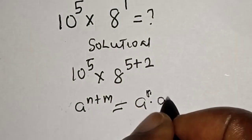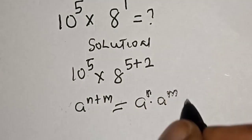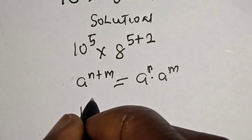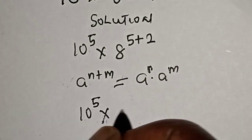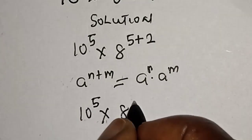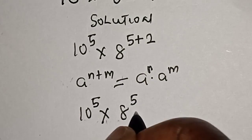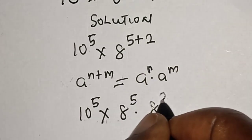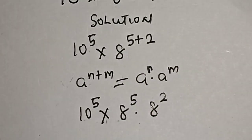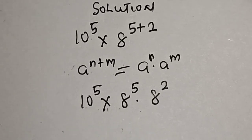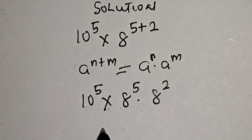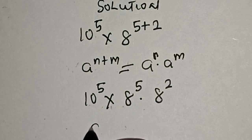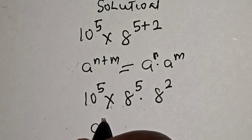Then 10 raised to power 5 multiplied by 8 raised to power 5, multiplied by 8 raised to power 2. Now from here, if you have a raised to power n.